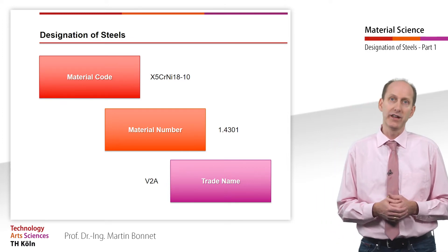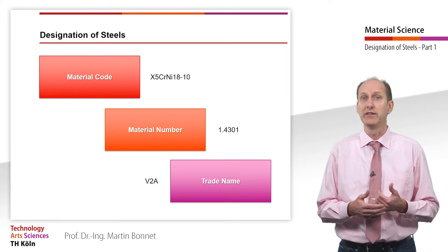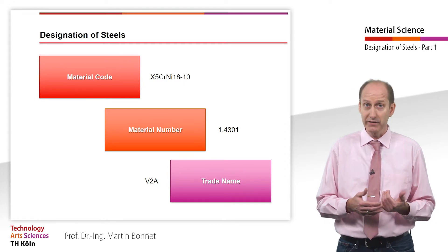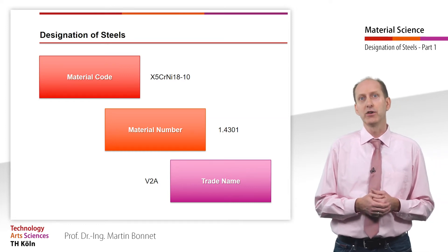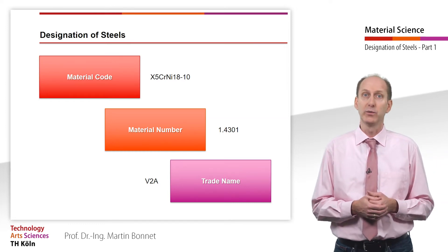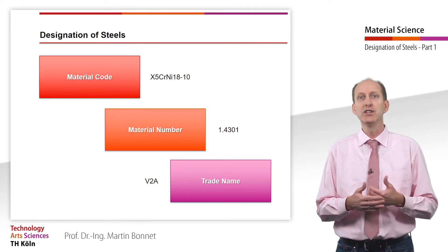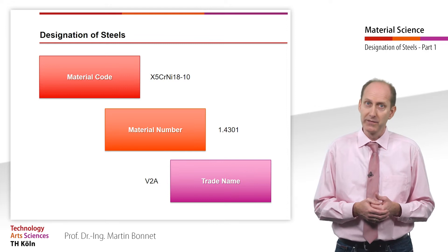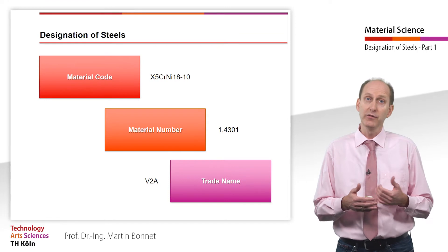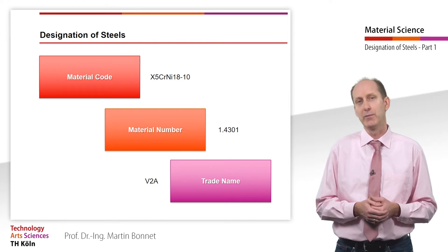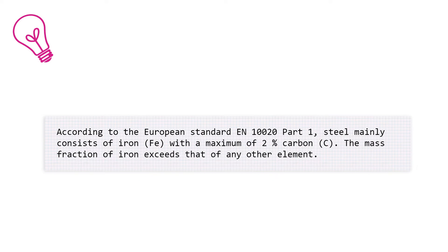The current valid standards for the designation of steel are the European EN standards, which replace the purely national standards. The new EN standards brought some considerable changes compared with the former designations. Even though this changeover may be completed on paper, it is not yet in the minds of all people involved, so that we can still find old and new names on the market.